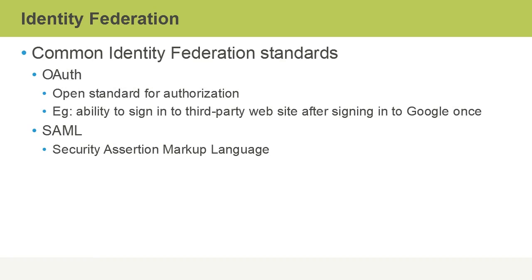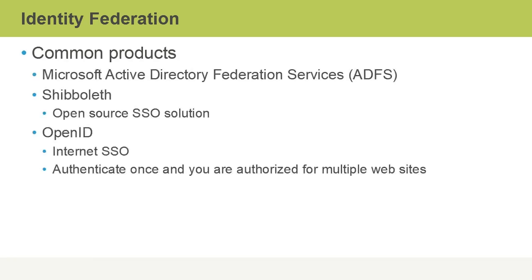Common identity federation standards include OAuth, the open standard for authorization, which gives us the ability to sign into a third-party website after signing into something like Google only once. SAML is the security assertion markup language. Common identity federation products include Microsoft Active Directory Federation Services, which is usually called ADFS; Shibboleth, which is an open source SSO solution; and OpenID, which is internet single sign-on where you authenticate once to OpenID and are authorized from there for multiple websites.